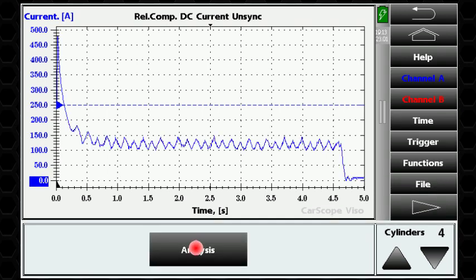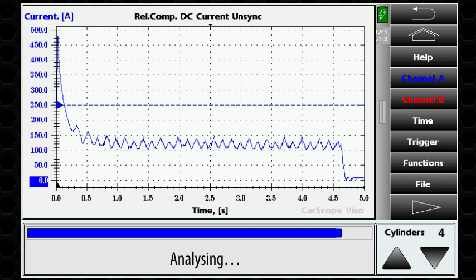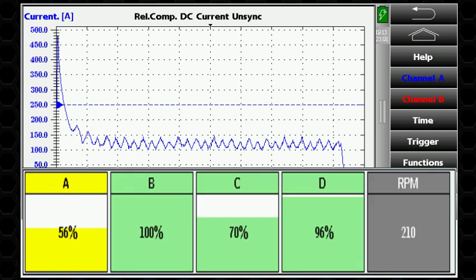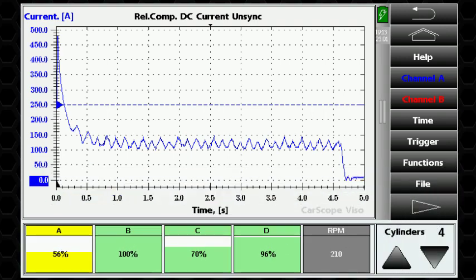CarScope Viso needs a few seconds to analyse the waveform and then the results will be shown as cylinder bars and cylinder percents together with the measured engine RPMs.